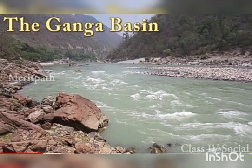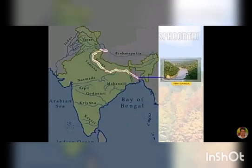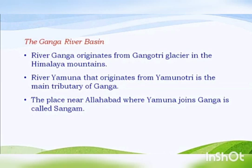The second river basin is the Ganga river basin. The river Ganga is the most important river in India, which lies in the middle of the northern plains. You must have heard about river Ganga, as it is the holy river of Hindus, and it originates from the Gangotri glacier in the Himalaya mountains. The river Yamuna is the main tributary of river Ganga, and the Yamuna originates from the Yamunotri glacier. The place where they meet is called Sangam.